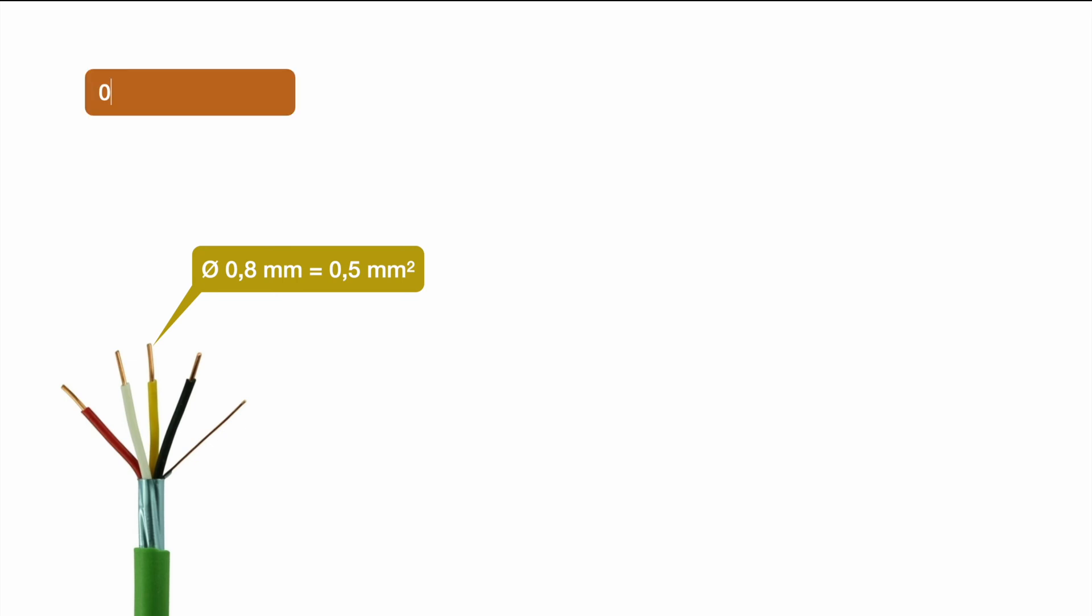To do so we will go with a simple example. For this we will assume we have this cable right here, it's a bus cable and the diameter is 0.8 millimeters which equals to 0.5 millimeters square. Since this is a copper cable we have to incorporate the specific resistance of copper which is 0.0171 ohm by millimeter square per meter.